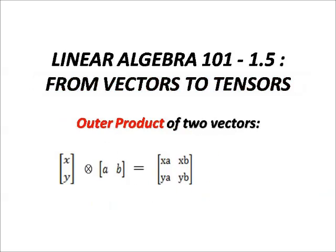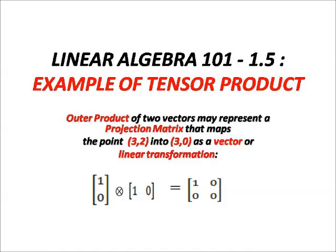Now the tensor product of [1, 0] with itself returns a projection matrix [1, 0; 0, 0]. As you can see on the screen right now.